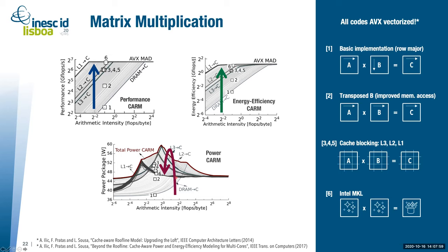More interesting was the power consumption behavior. As we accessed DRAM, we got the expected power for DRAM accesses. As we accessed more L3, power consumption raised. Blocking for L3 gave the highest power. But as we used more L2, L1, or MKL, power consumption dropped since we spent more time in L1. This suggested that combining all these models gives hints on aspects beyond just performance.